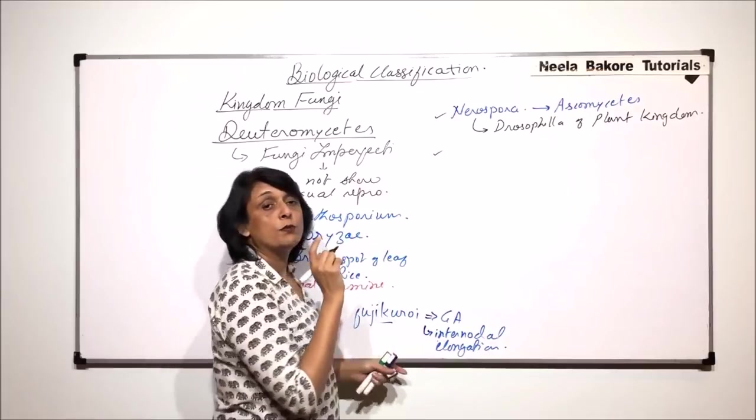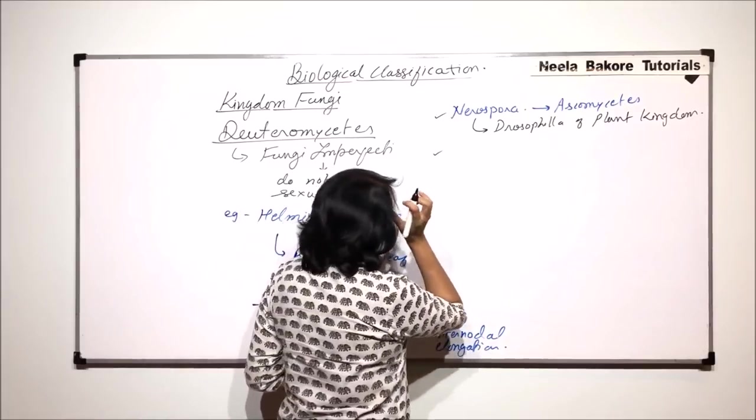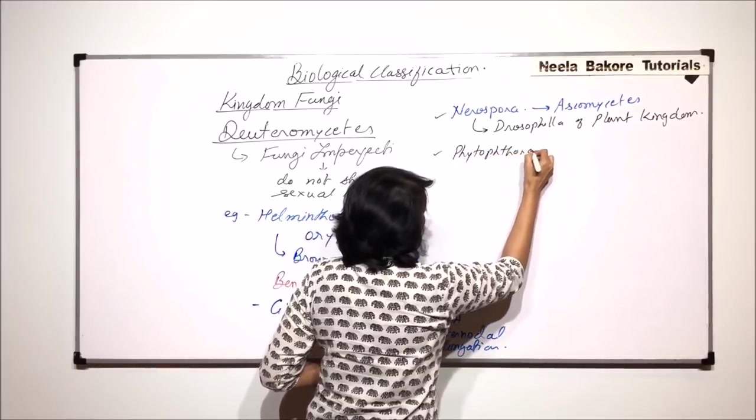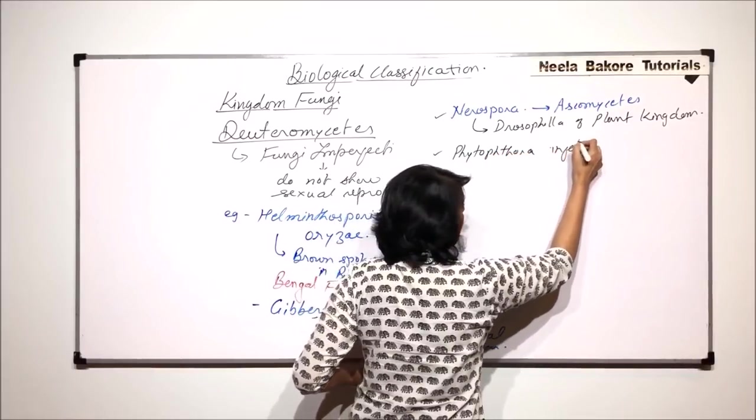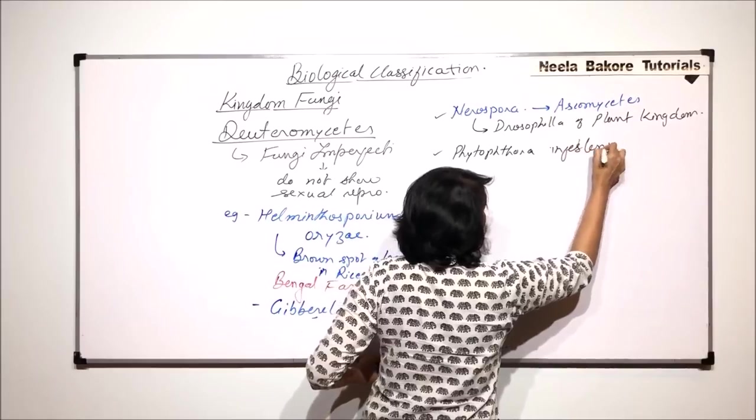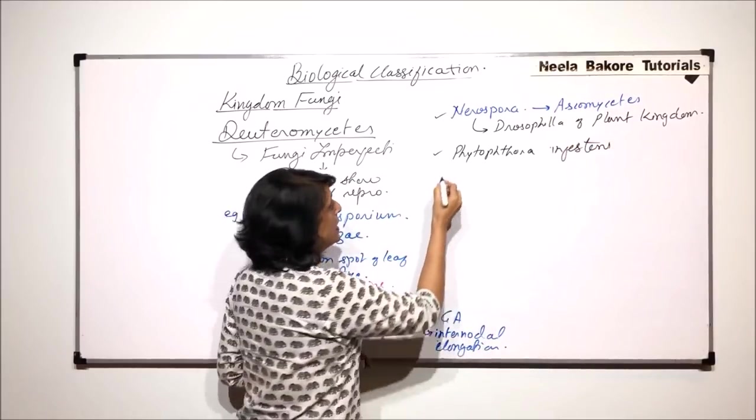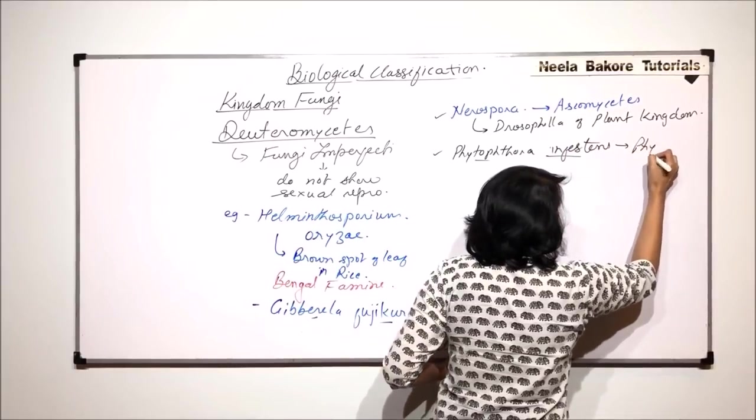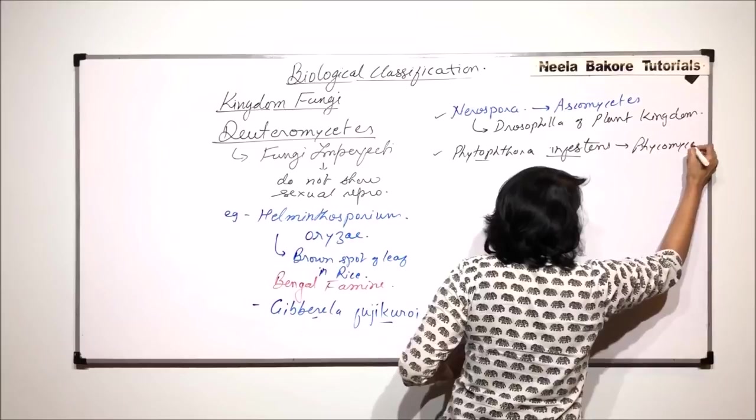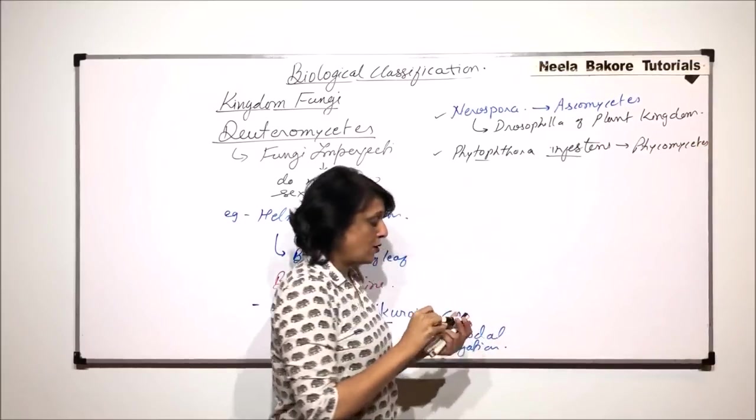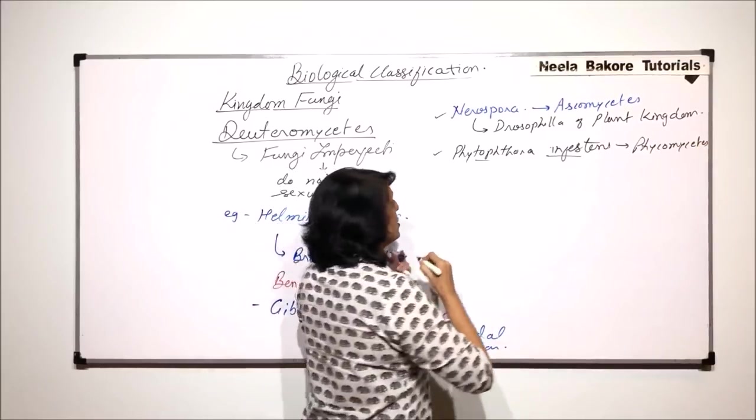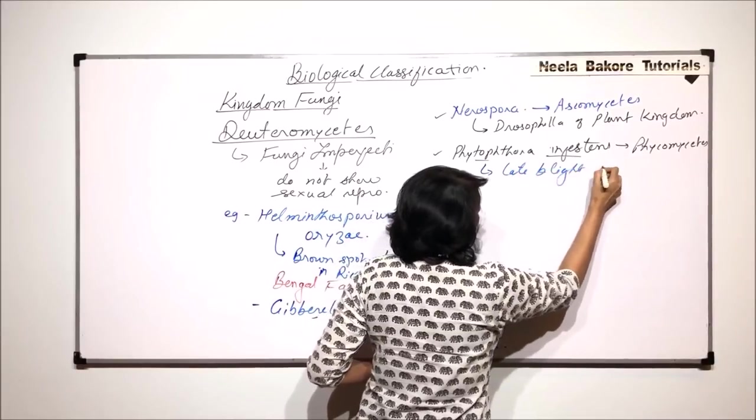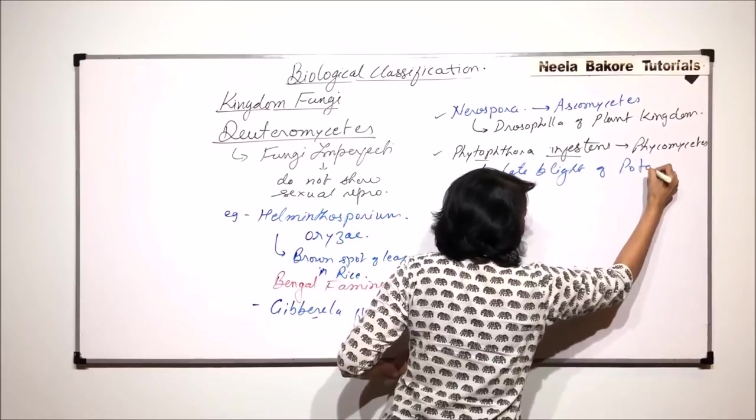The other one which belongs to Phycomycetes is called Phytophthora infestans. It belongs to Phycomycetes and causes a disease which is known as late blight of potato.